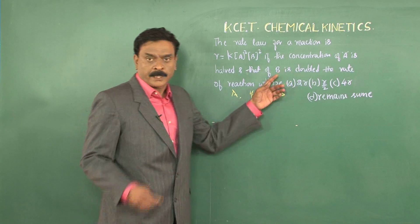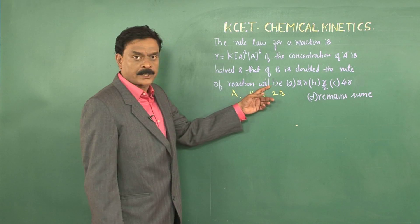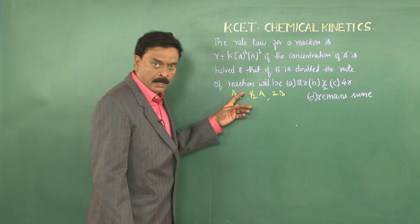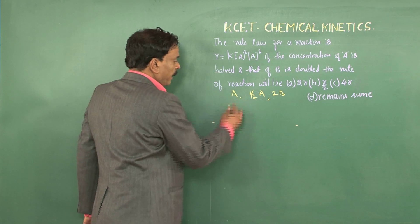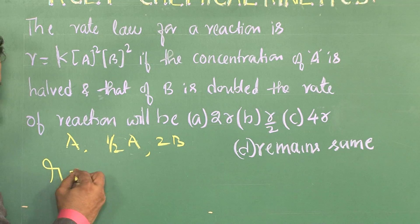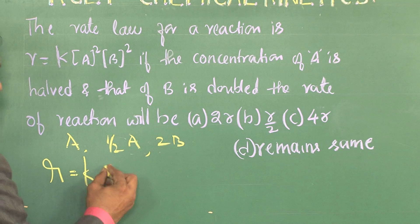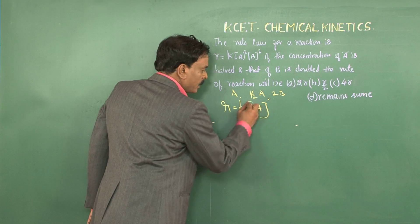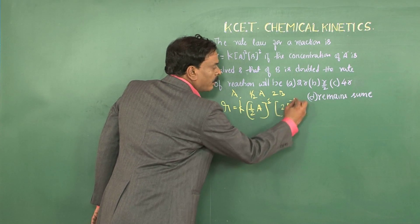The question asks what will happen to the rate of the reaction when concentration of A is halved and B is doubled. When you write the expression again: R = K × (A/2)² × (2B)².